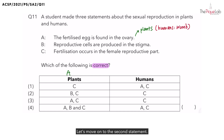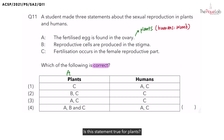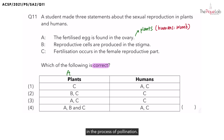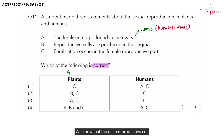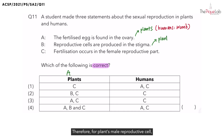Let's move on to Statement B: 'Reproductive cells are produced in the stigma.' Is this true for plants? No. The stigma does not produce any reproductive cells — all it does is receive pollen grains in the process of pollination. The male reproductive cell is found in the pollen grains, and the anther produces the pollen grains. Therefore, for plants, male reproductive cells are produced by the anther.